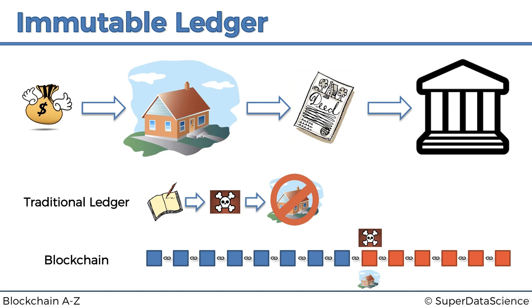The World Bank estimates that about 70% of the population of the world don't have access to proper facilities that can register title deeds. That's mostly in third-world countries, but still, that's a huge problem — and it's a problem that blockchain can solve, that this new technology can solve.